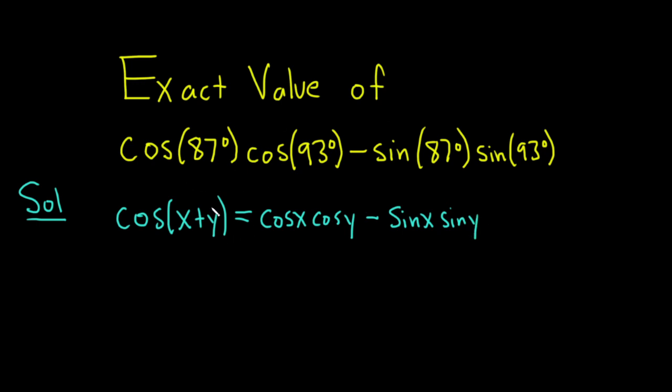This matches the expression exactly. In this case we have cosine of 87 and cosine of 93, so x is 87 degrees and y is 93 degrees.